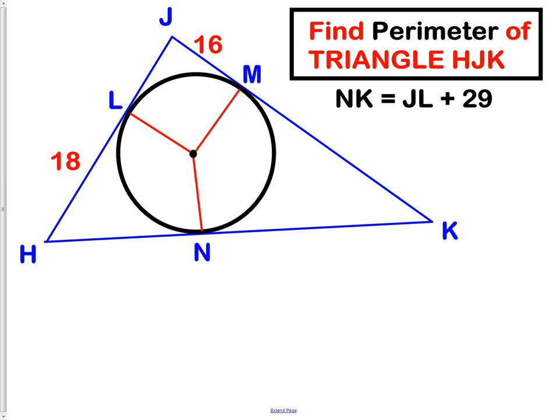Find the perimeter of triangle HJK. We're going to use the same theorem here. We have a circumscribed, or a circle that is inside a triangle. The circle is inscribed in the triangle. It is touching at point L, M, and N. Therefore, we have a tangent line on all three sides of the triangle.